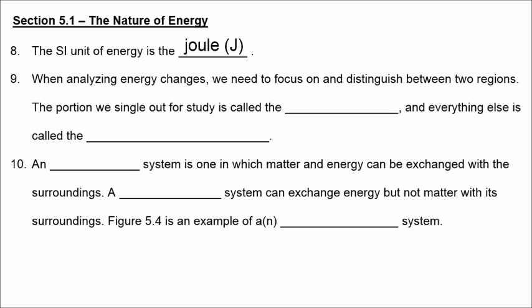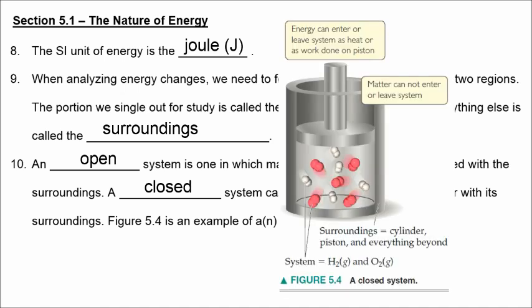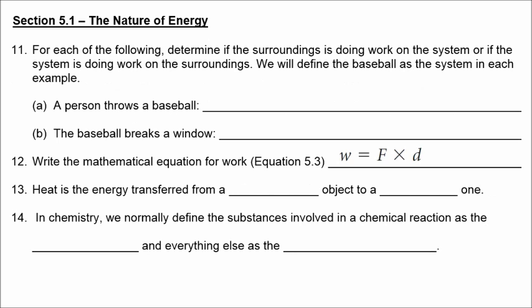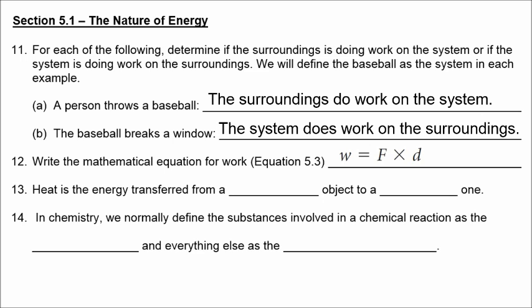The SI unit of energy is the joule. When we analyze energy changes, we focus on the portion singled out for study, called the system, and everything else is called the surroundings. You can have an open system in which both matter and energy can be exchanged with the surroundings. A closed system exchanges energy but not matter — figure 5.4 is an example of a closed system. Work equals force times distance. Heat is defined as the energy transferred from a hotter object to a colder one. In chemistry, the substances in the chemical reaction are defined as the system.